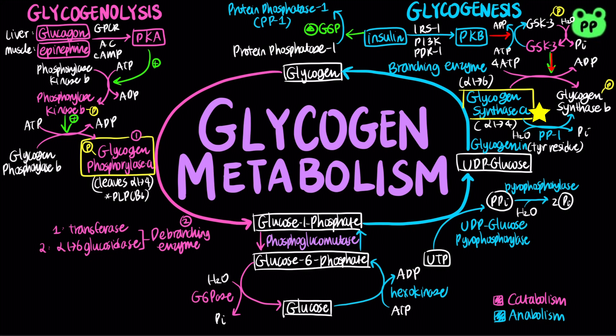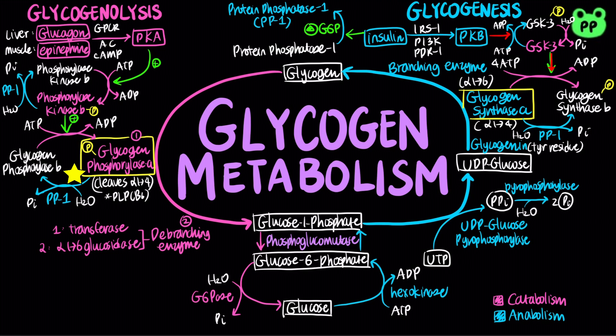Protein phosphatase 1, or PP1, is also allosterically activated by glucose-6-phosphate. Activated protein phosphatase 1 can also dephosphorylate phosphorylase kinase B and glycogen phosphorylase, inhibiting glycogenolysis. Protein phosphatase 1 is inactivated by PKA.